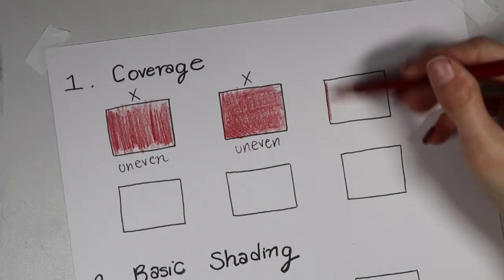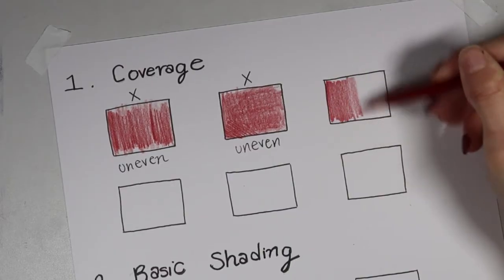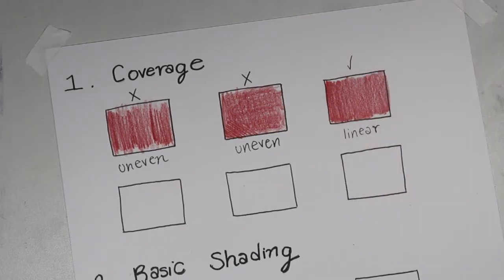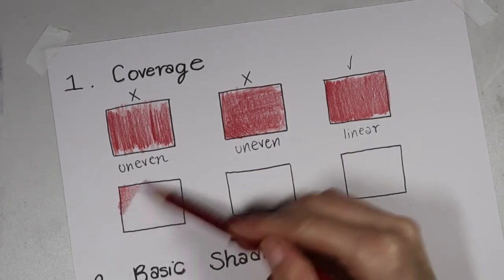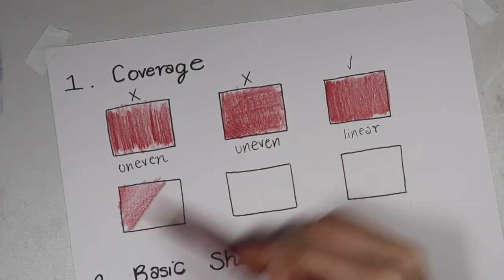This is a linear shading method. It looks better than the first two. I would say that this is a decent method to shading. Now let's try something else. Let's try doing the same thing. So we're going to color in the same direction, but we're going to only color horizontally.